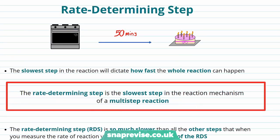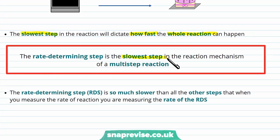Now we've seen our analogy and we'll be able to come back to that throughout the video. Let's take a closer look at the rate determining step. It's the slowest step in a reaction and it will dictate how fast the whole reaction can happen. It's the slowest step in a multi-step reaction. The rate determining step is so much slower than all the other steps that when you measure your rate of reaction, you're really measuring the rate of the rate determining step, because all the other steps happen so quickly that they don't impact on that overall time.